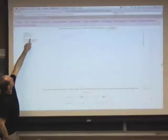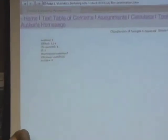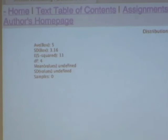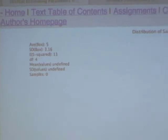So the SD of the box is 3.16. The square of the SD of the box is 3.16 squared, which is about 10. Let's start by drawing with replacement.